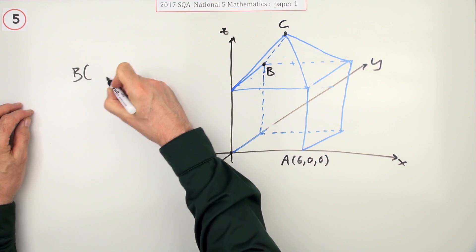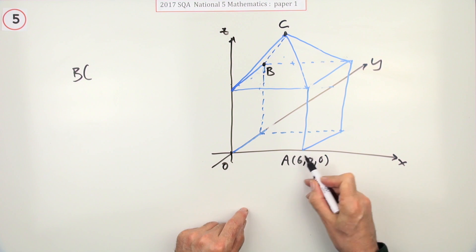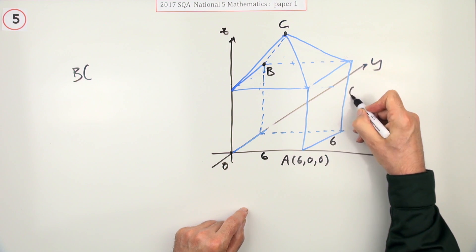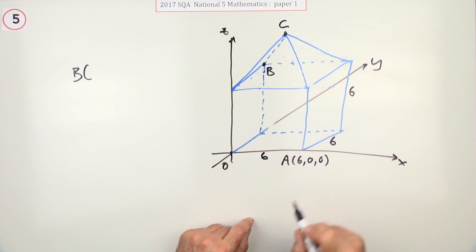Well B, it'll take three numbers. Now if A's the point 6,0,0, it's because the length of each side is 6. It's 6 that way, it's 6 that way, and it's 6 that way. All the sides are 6.